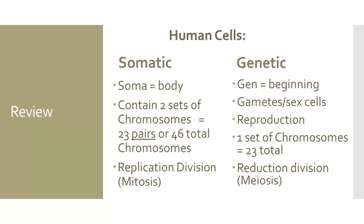Genetic cells, on the other hand, are for reproduction. Genetic cells are also referred to as gametes, or sex cells, and in humans we know them as sperm or ovum. Genetic cells also undergo replication division or mitosis, but it doesn't stop there. The genetic cell also undergoes a division called reduction division, or meiosis. This allows for the resulting four daughter cells to each have half of the typical cell's chromosomes — 23 total chromosomes, as compared to 46 total chromosomes of a somatic cell.